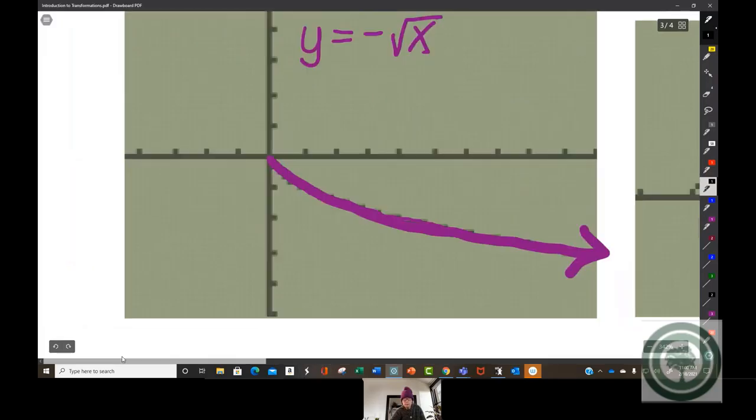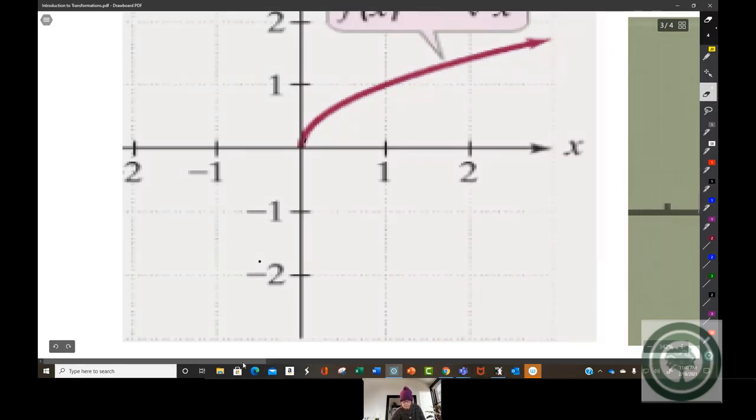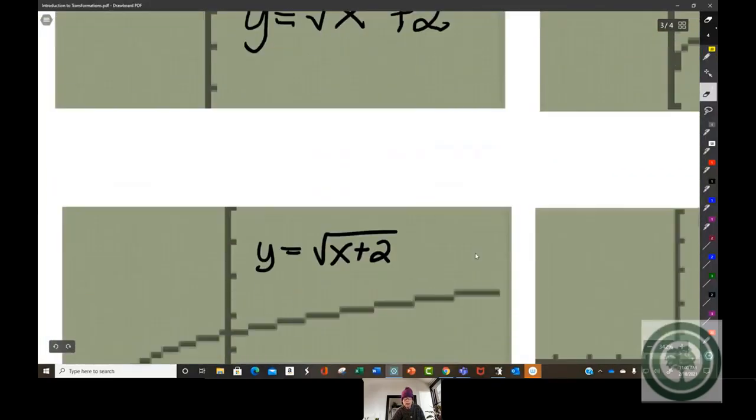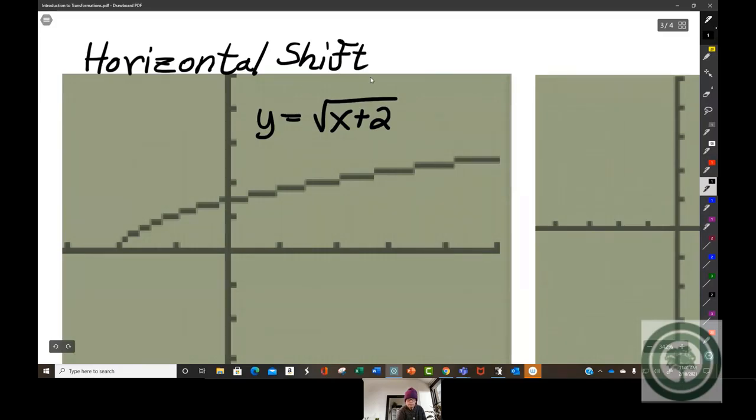we have our basic function. Let's get rid of that. Don't want any confusion. Right here. We have our basic graph. Now, I moved it up and down, right? There it is, moving it up and down. Now, if I put the plus 2 underneath the square root radical, that moves the basic function two units to the left. So this is a horizontal shift. Horizontal means sideways.